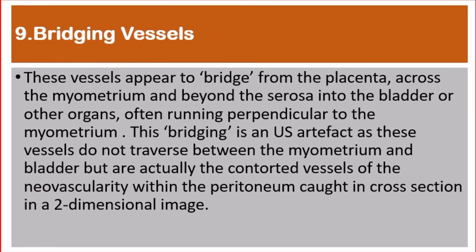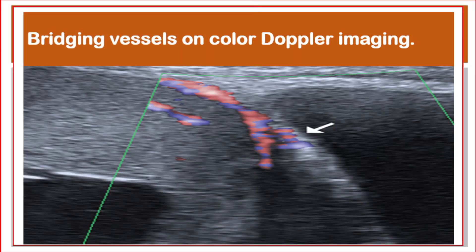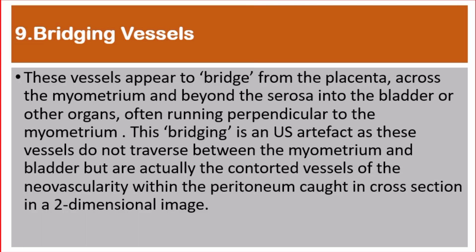Number 9: Bridging vessels. These vessels appear to bridge from the placenta across the myometrium and beyond the serosa into the bladder or other organs, often running perpendicular to the myometrium. This bridging is an ultrasound artifact, as these vessels do not actually traverse between the myometrium and the bladder, but are the contorted vessels of the neovascularity within the peritoneum seen in cross-section in a two-dimensional image.